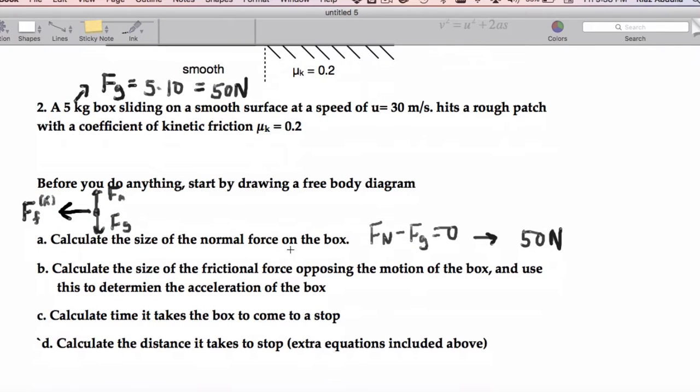Now it says calculate the size of the frictional force opposing the motion of the box. So that kinetic friction force is going to equal mu kinetic times the normal force. And in this case,